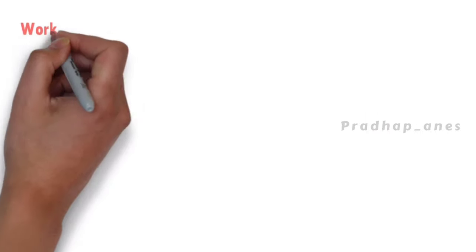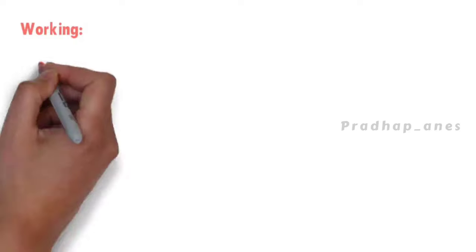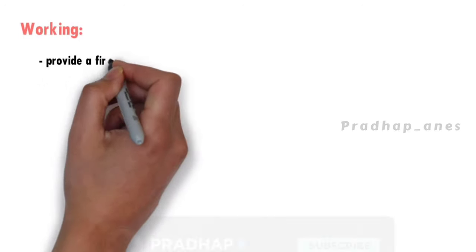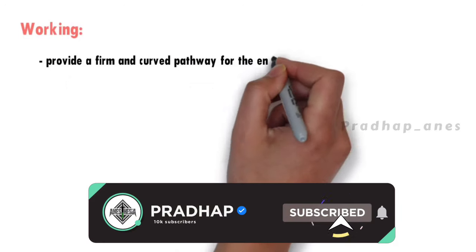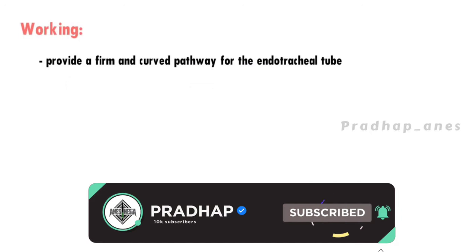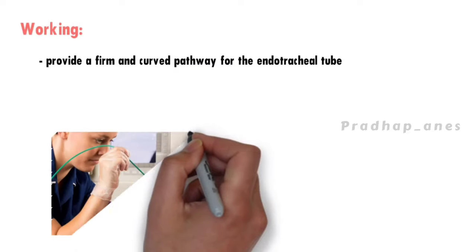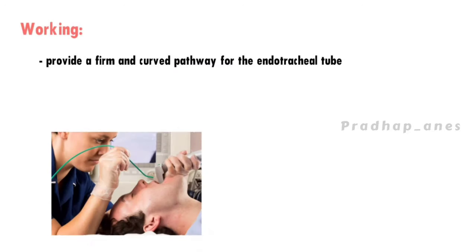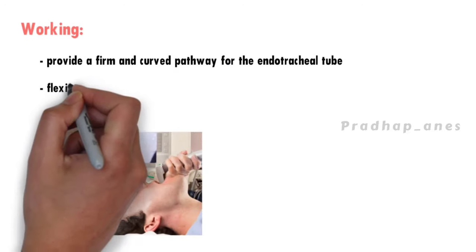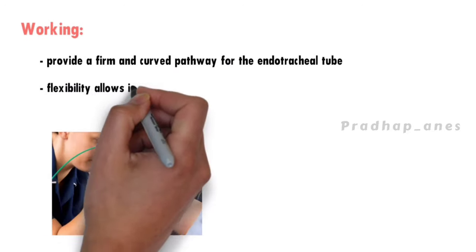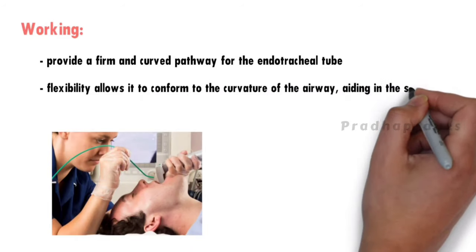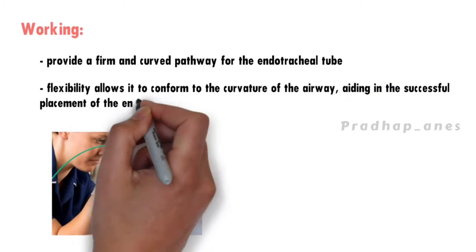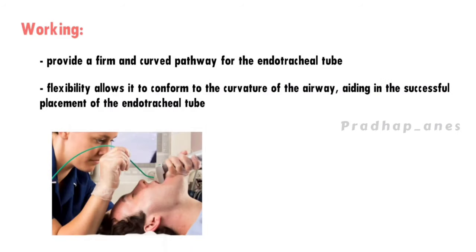Working: The primary function of the Bougie is to provide a firm and curved pathway for the endotracheal tube, making it easier to navigate past obstructions or anatomical challenges. Its flexibility allows it to conform to the curvature of the airway, aiding in the successful placement of the endotracheal tube.